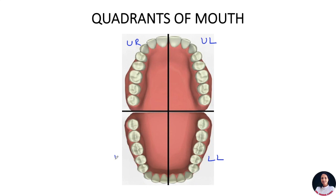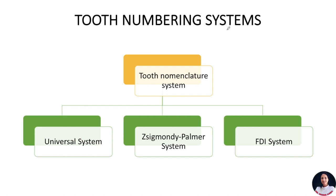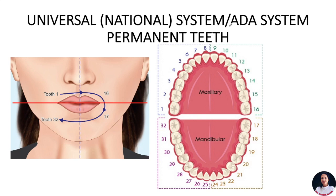Now we will see how to number the teeth present in the mouth. There are many tooth numbering systems, but mainly 3 types are commonly used by dental professionals depending upon where you live. These systems are the Universal system, the Palmer notation system, and the FDI system of tooth numbering. Let's start with the Universal system.